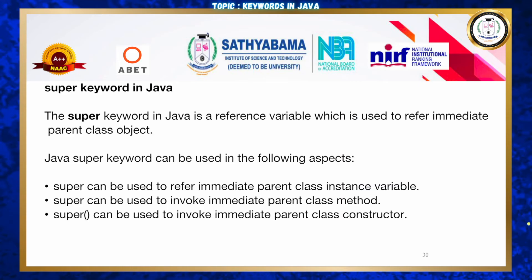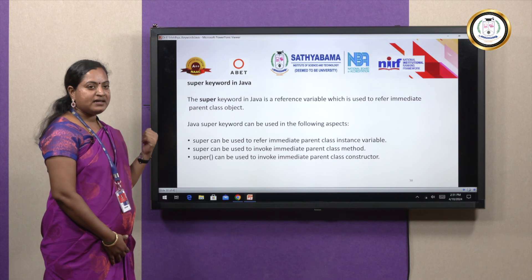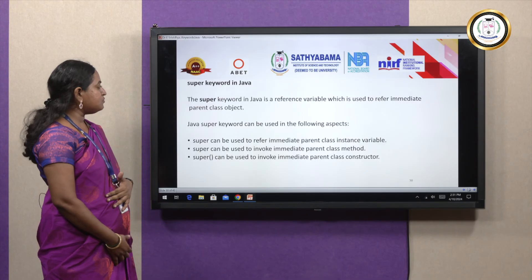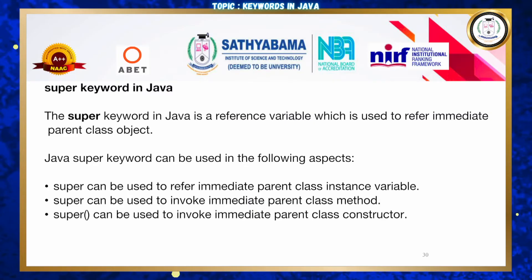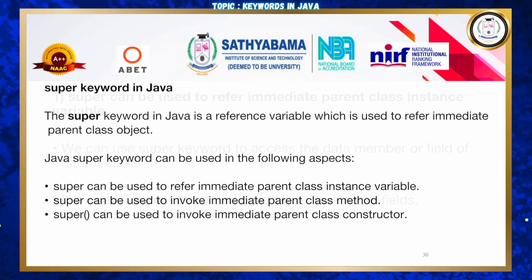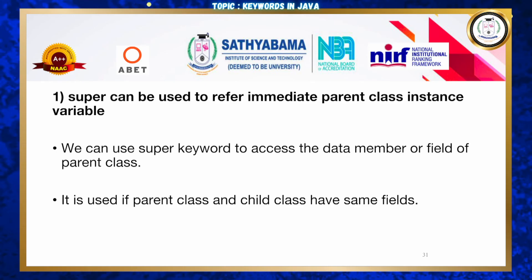The next topic is the super keyword in Java. The super keyword is a reference variable used to refer to the immediate parent class object. It is mainly used in the inheritance concept. The super keyword can be used in three ways: to refer to the immediate parent class instance variable, to invoke the immediate parent class method, and to invoke the immediate parent class constructor.